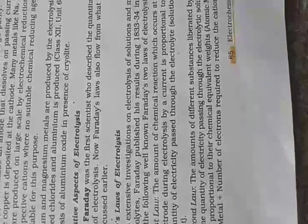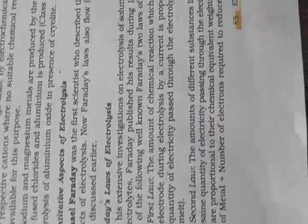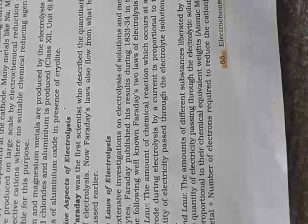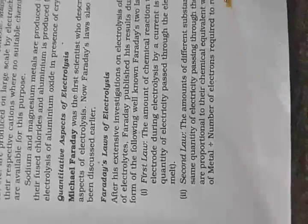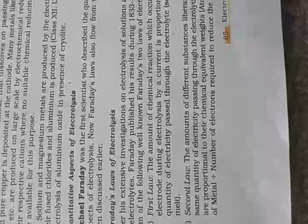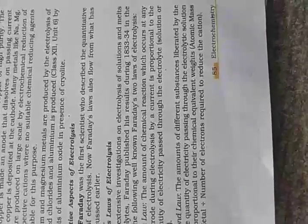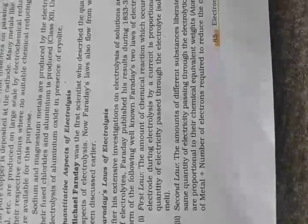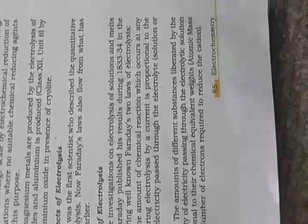Faraday's Second Law: the amounts of different substances liberated — for example, how many moles of pure metal we are getting going from impure to pure — depends on the same quantity of electricity passing through the electrolytic solution. The amounts are proportional to their chemical equivalent weights, that is, the atomic masses of metals divided by the number of electrons required to reduce the cation. These were Faraday's two laws of electrolysis.